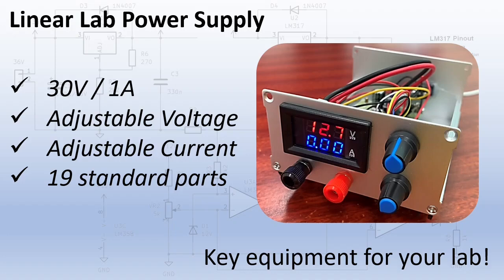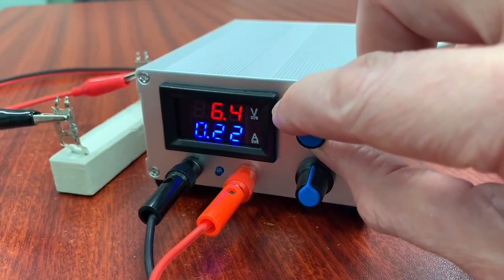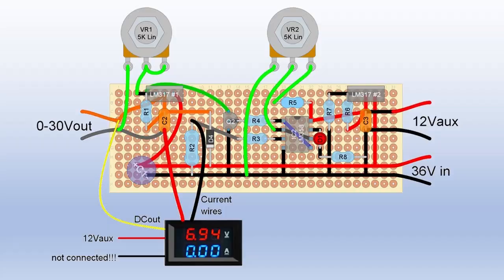Today I will show you how you can build one yourself using common components. It has 30 volts, 1 amp, with adjustable voltage and adjustable current limit. And you can build it with 19 standard parts.